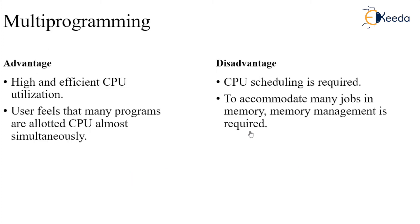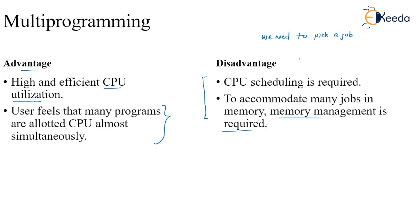To summarize multi-programming, we have advantages and disadvantages. The advantage is high and efficient CPU utilization. The user can feel that multiple programs are running simultaneously. The disadvantages are: we need to pick a job, which requires CPU scheduling; and to accommodate jobs in memory, memory management — allocation, de-allocation, and free space management — is required.